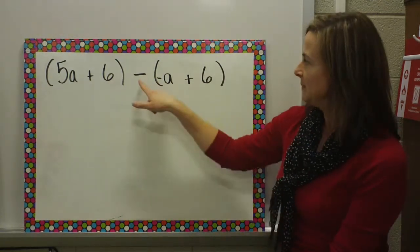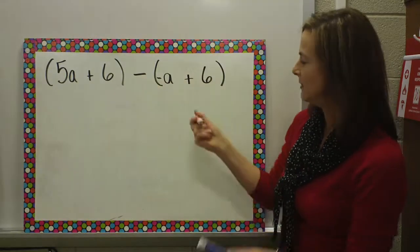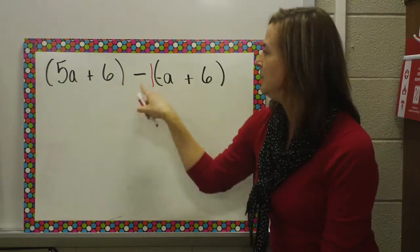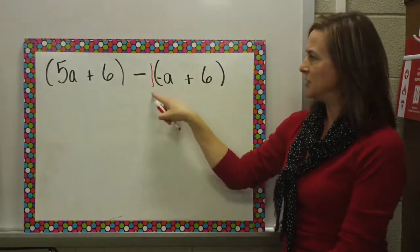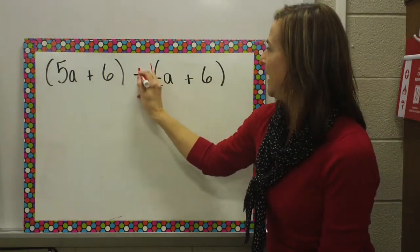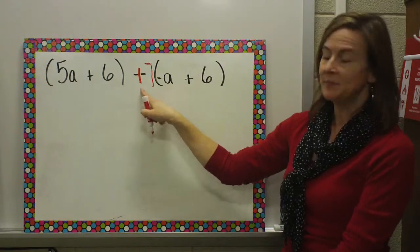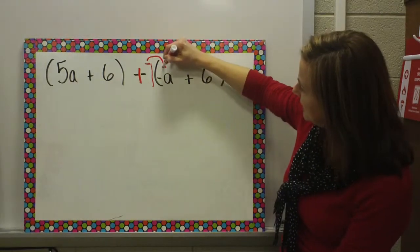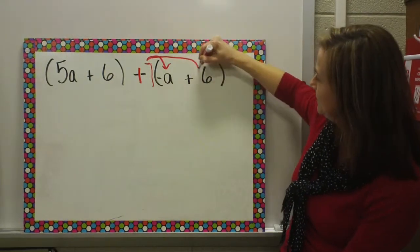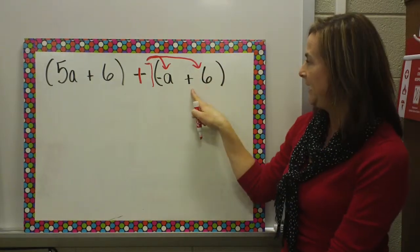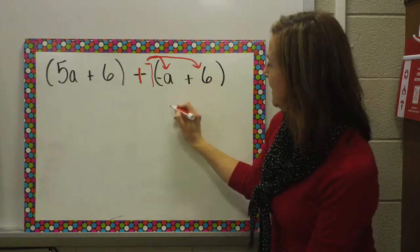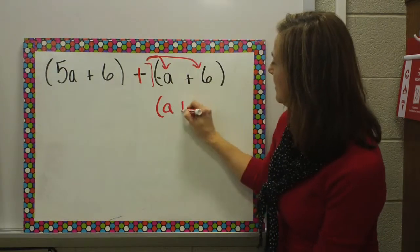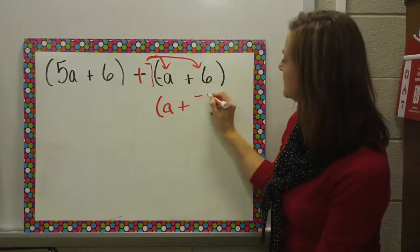This is where that ghost one comes in. If I have subtract and then I have these parentheses, I'm going to get that ghost one. Because if I KFC — keep, flip, change — I don't have anything to change, so I'm going to put that ghost one in there to help. So I add the opposite, and now I'm adding a negative one, which means I have to distribute that. I'm going to distribute that negative one times a negative A and times six. So negative one times negative A is a positive A, and negative one times six is a negative six.